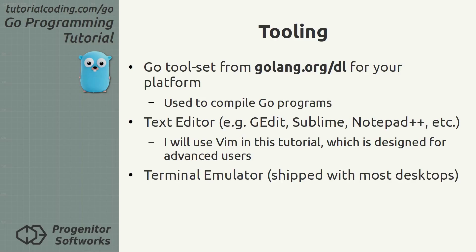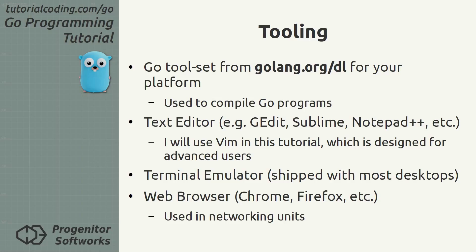A terminal is needed to interact with the Go command and compile applications. Every major desktop ships some form of terminal, so nothing needs to be installed, but you should have a basic familiarity with it — especially how to navigate a file system and set environment variables. Finally, you will need a web browser. Any will do, though I suggest one that supports modern web standards. Some units will use web-based interfaces and the browser is needed to access them.